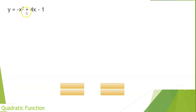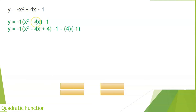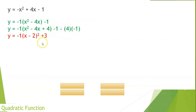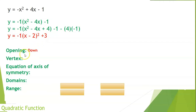Another example: y = −x² + 4x − 1. Factor out −1: −1(x² − 4x) − 1. Complete the square: half of 4 is 2, square that gives 4. Add 4 inside, subtract 4 at end, but multiply −1 outside: −1(x − 2)² + 4 − 1 = −(x − 2)² + 3. The opening is downward because a is negative. The vertex is (2, 3) and it is a maximum point because it opens downward.